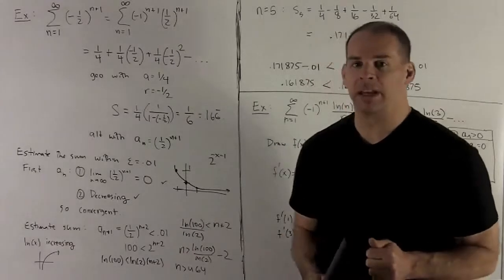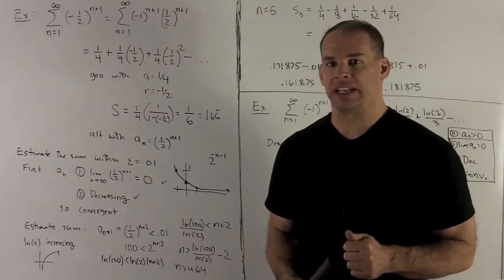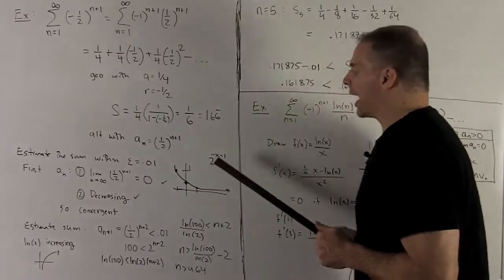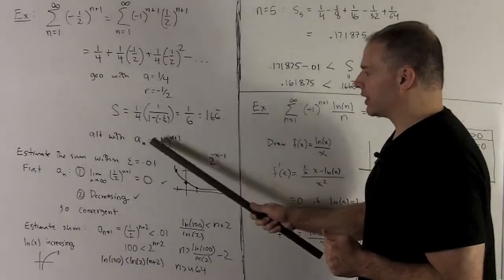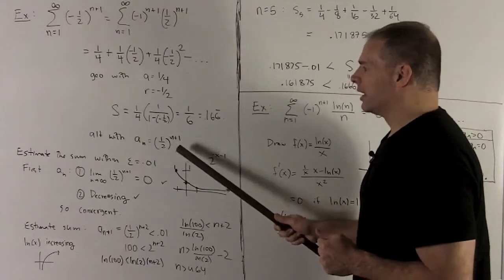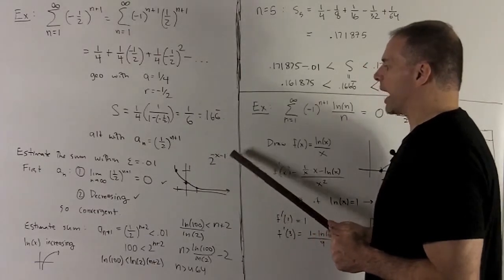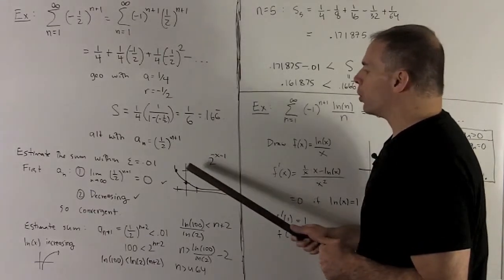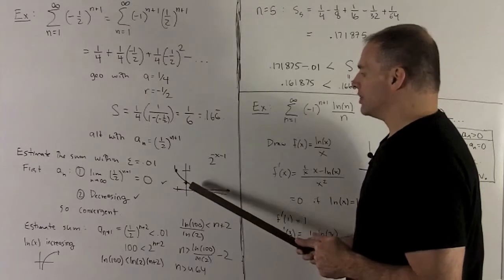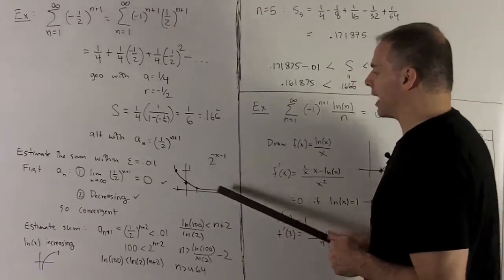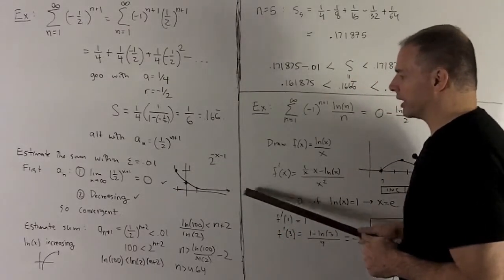Next, we need to show that the limit of a sub n as n goes to infinity is equal to 0. So I can draw the graph of the function that I fit to this, 1 half to the x plus 1, which is the same as 2 to the minus x minus 1. You can plot points at minus 1, 0, and 1, and then connect the dots. And then you get the graph looking like this.